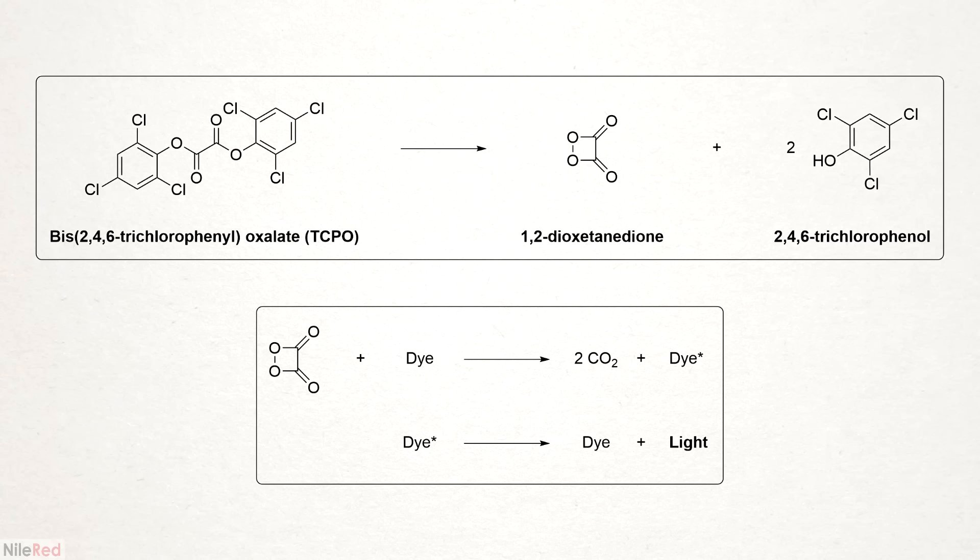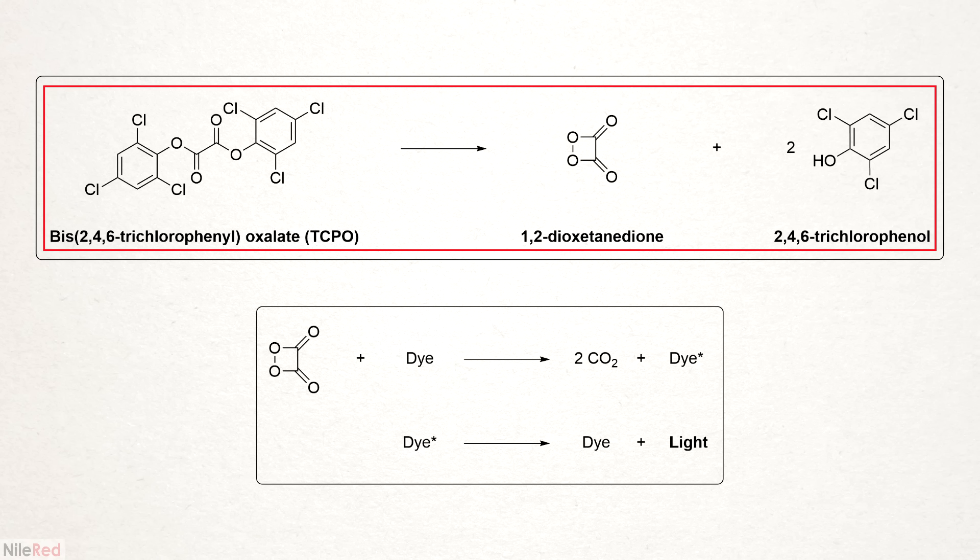As I said in the intro, the chemiluminescence of glow sticks works through the indirect process. When the peroxide is added, the TCPO breaks down to form an excited state intermediate, known as 1,2-dioxetanedione. As a side product, it reforms the starting material, trichlorophenol.